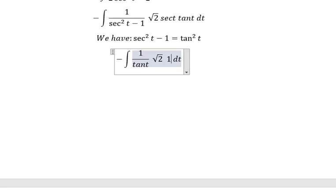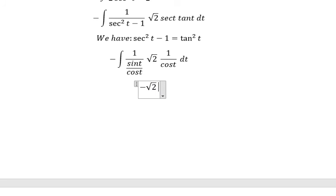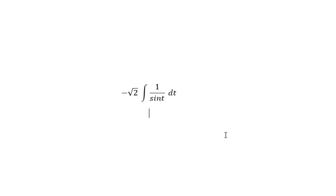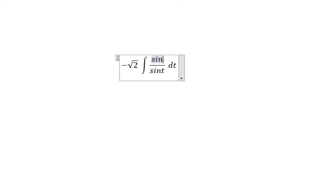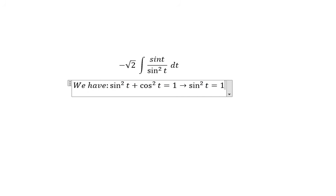Secant(t) we turn to 1 over cos(t), and tan(t) we turn to sin(t) over cos(t). So cos(t) and cos(t) cancel. Now we just have negative square root of 2 and the integral of 1 over cos(t) dt. So we multiply by cos(t) on numerator and denominator. Using sin²(t) plus cos²(t) equals 1, so sin²(t) equals 1 minus cos²(t).